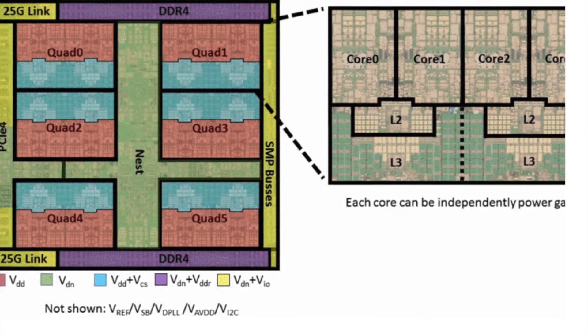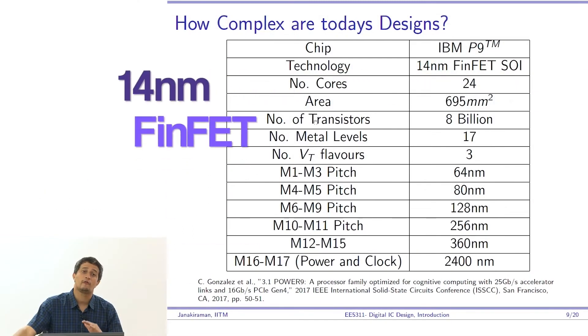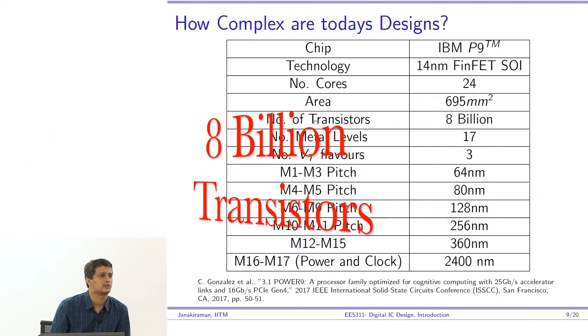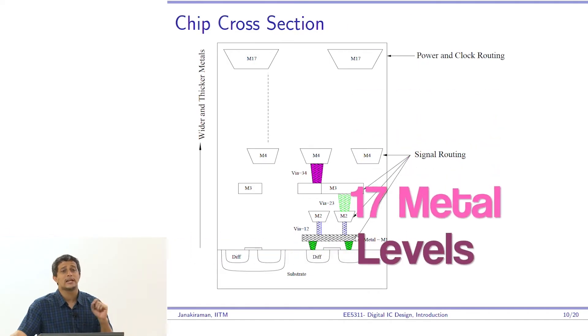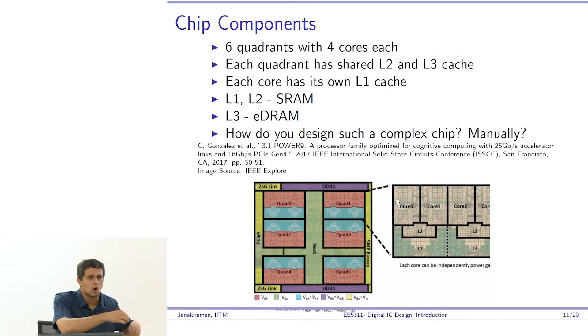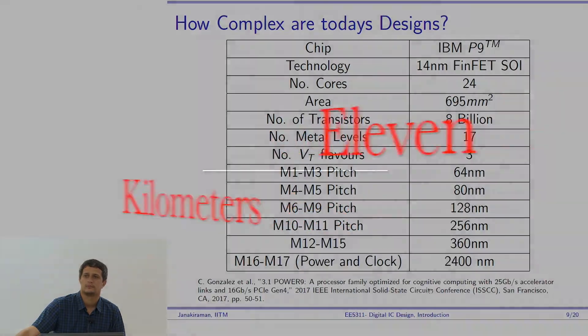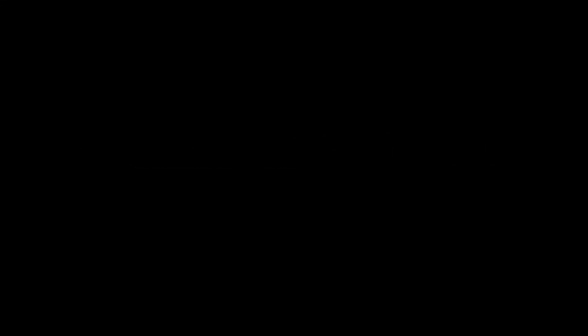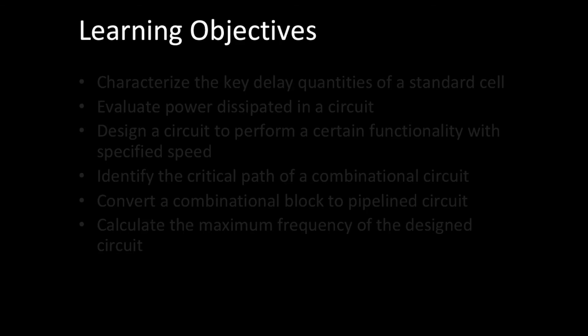Before we jump into the details of this course, I think it's important to get a feel for what a microprocessor chip looks like in today's technology. The 14 nanometer FinFET SOI technology, the size of a 10 rupee coin, has 8 billion transistors, six quadrants with four cores each. In the back end of line they have 17 levels of metal in that microprocessor. If I just lay out all the interconnects, the metals in one straight line, it turns out that the total length is 11 kilometers.